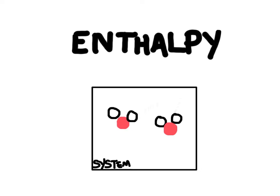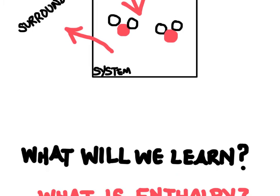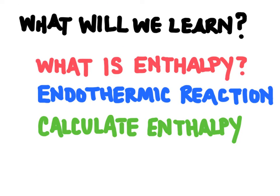Everything that's outside of the system, or outside this box, would be the surroundings. The surroundings are basically the rest of the universe, and so heat can either transfer out of the system or it could transfer into the system. In this video we're going to learn what enthalpy is, and then we're going to look at an experiment that shows heat going into a system.